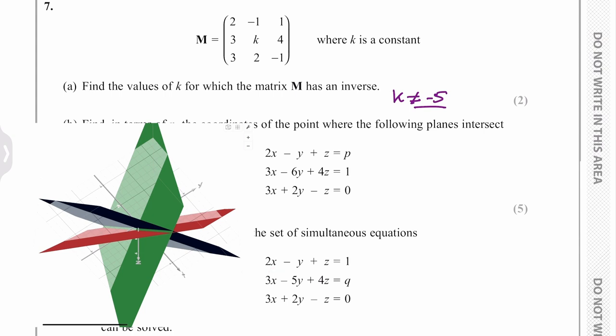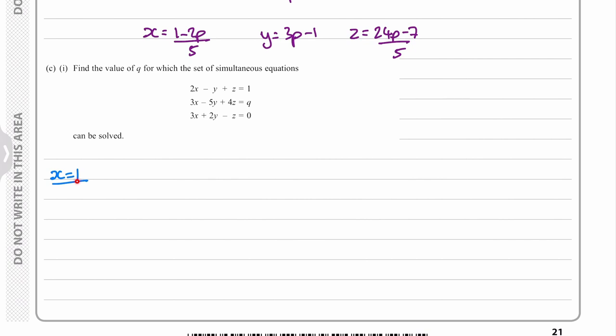So all we need to do is let an x value equal one then find the y and the z value when it passes through x equals one. So when x equals one we can substitute that into each of these three equations then we'll have three equations with two unknowns.